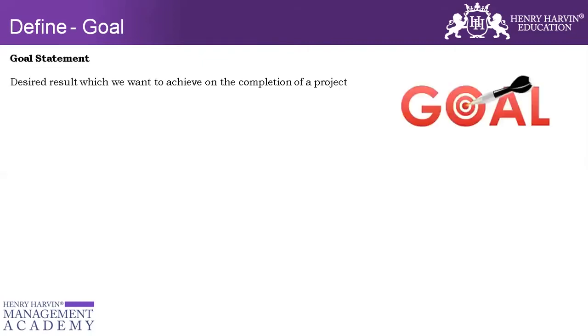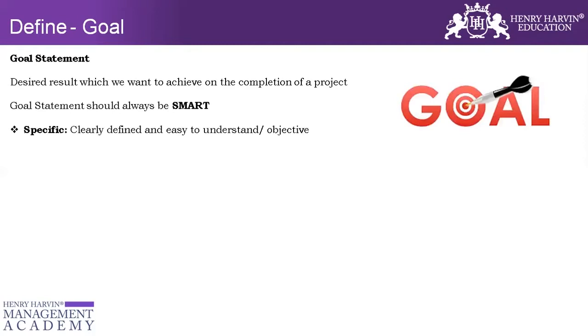To remove any sort of ambiguity, there is an approach we use in the goal statement, and that approach is known as the SMART goal. S stands for Specific — it's clearly defined and easy to understand so that everybody understands what the goal is. It should be Measurable — that's why it reaches a stage where I want to reduce from 10% to 5%.